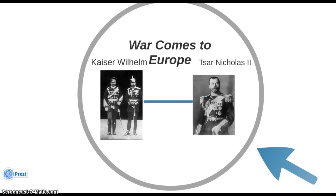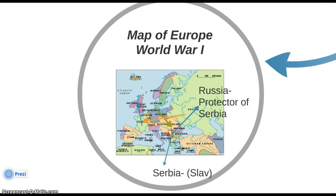On June 28th, 1914, the heir to the Austro-Hungarian Empire, Franz Ferdinand, was assassinated as he visited Bosnia, along with his pregnant wife. The person responsible was a Serbian nationalist named Gavrilo Princip. The Serbian nationalists felt threatened by Austria — a big neighbor to the north — and a small group of nationalists embraced what today we would call terrorist tactics.